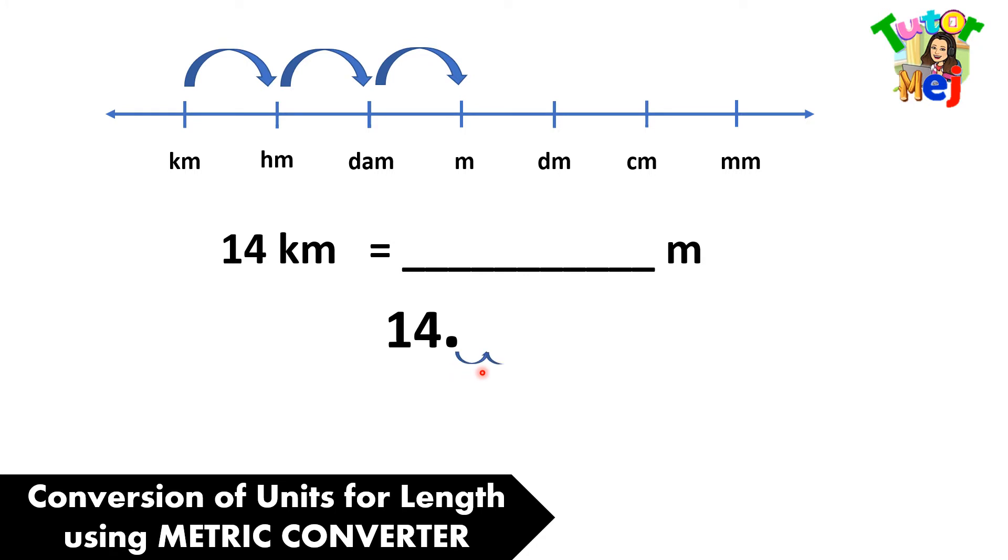and then count 1, 2, 3 to the right, then move the decimal point here. Let us affix the zeros, meaning we have 14,000 meters equals 14 kilometers.